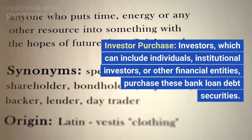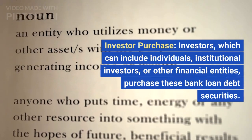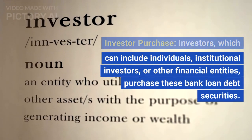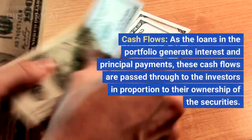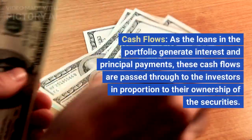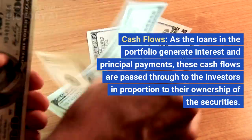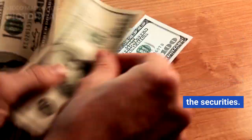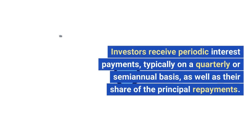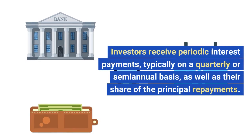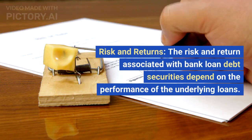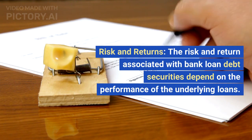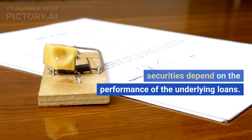Investor purchase: investors, which can include individuals, institutional investors, or other financial entities, purchase these bank loan debt securities. Each security represents a portion of the total loan portfolio. Cash flows: as the loans in the portfolio generate interest and principal payments, these cash flows are passed through to the investors in proportion to their ownership of the securities. Investors receive periodic interest payments, typically on a quarterly or semi-annual basis, as well as their share of the principal repayments. Risk and return: the risk and return associated with bank loan debt securities depend on the performance of the underlying loans.